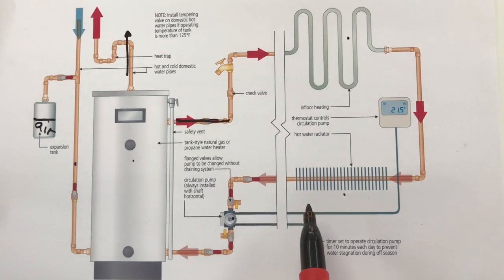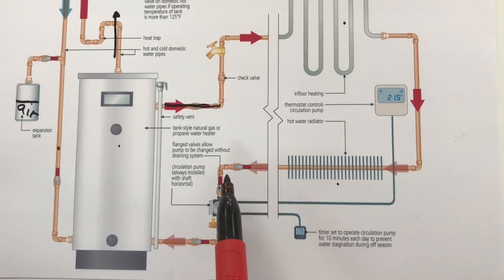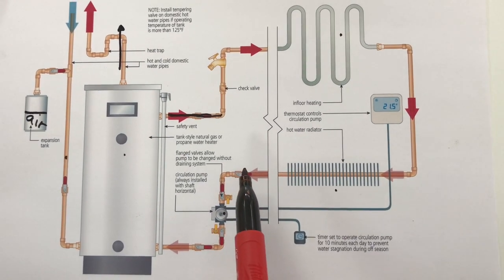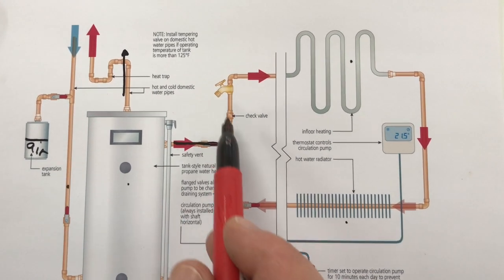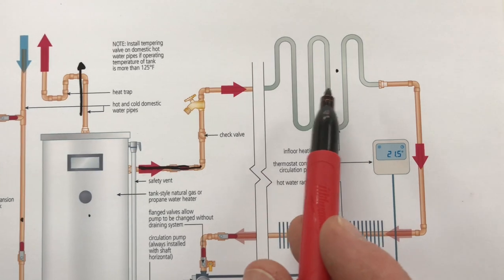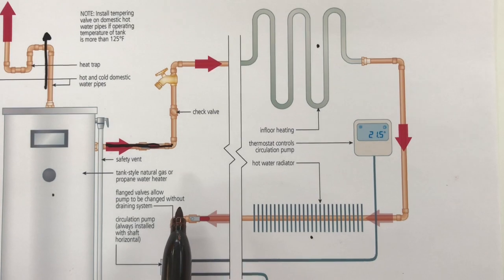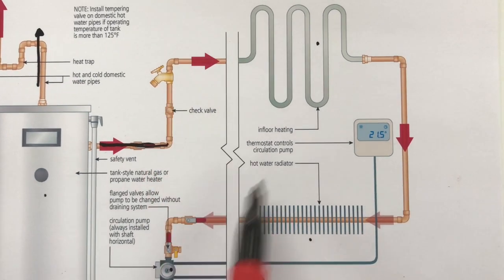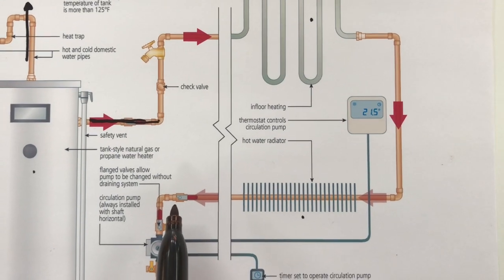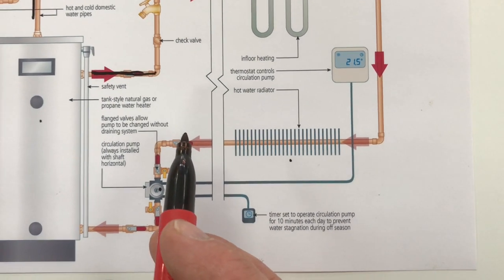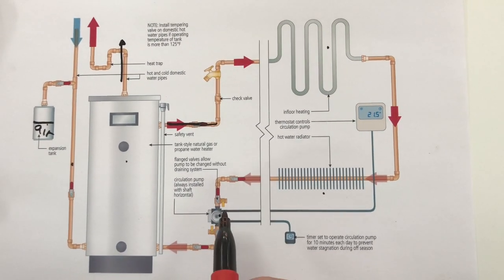Now the simple system is good but it can't be used in all jurisdictions because of a potential problem. And that problem has to do with the fact that in the off season the water that's in the heating side of the system is going to just sit there. It's possible that microbes could grow in there because the water is not circulating for months on end and some jurisdictions do not allow that.